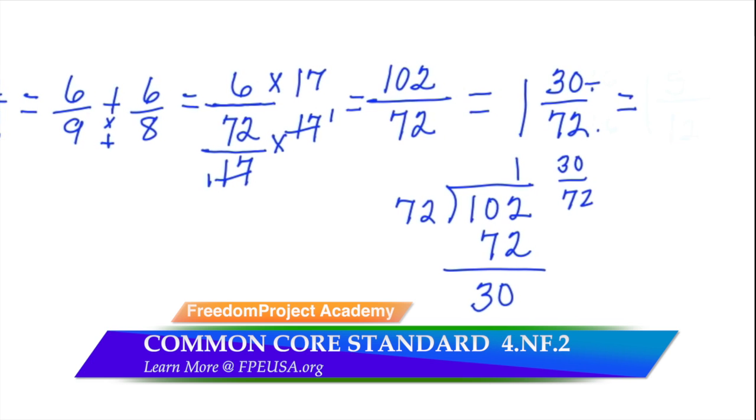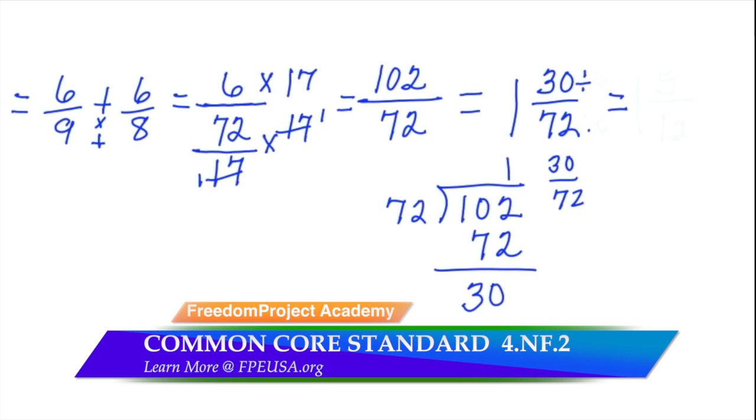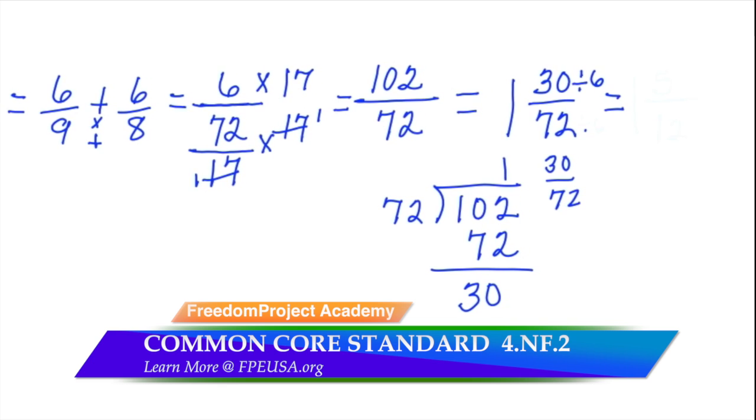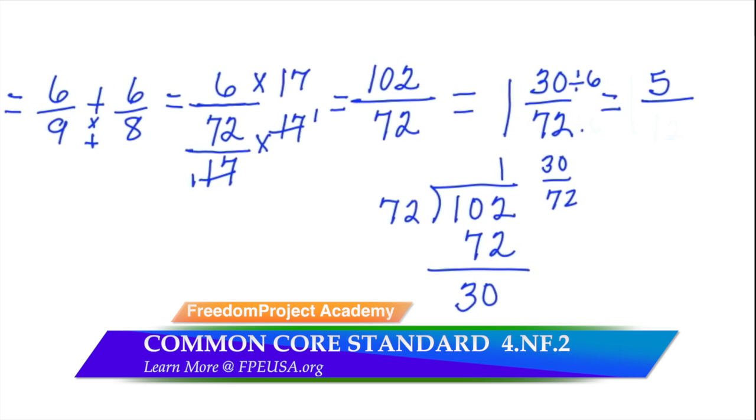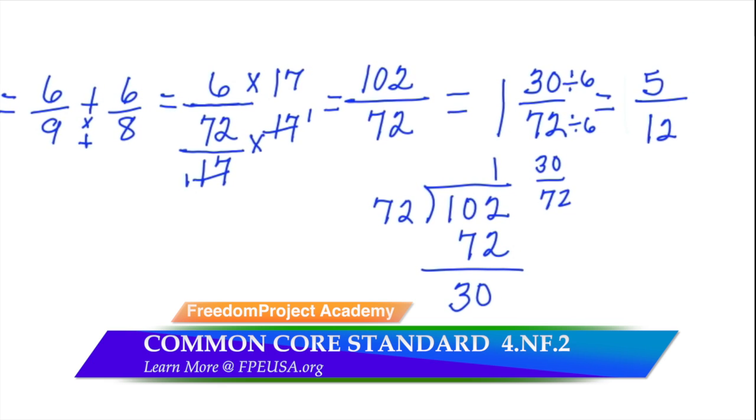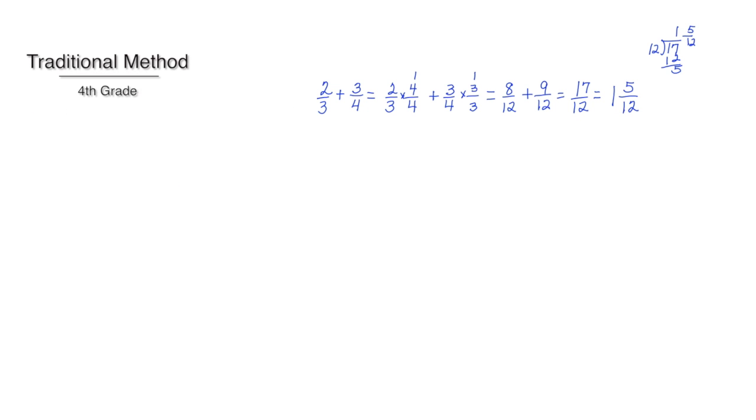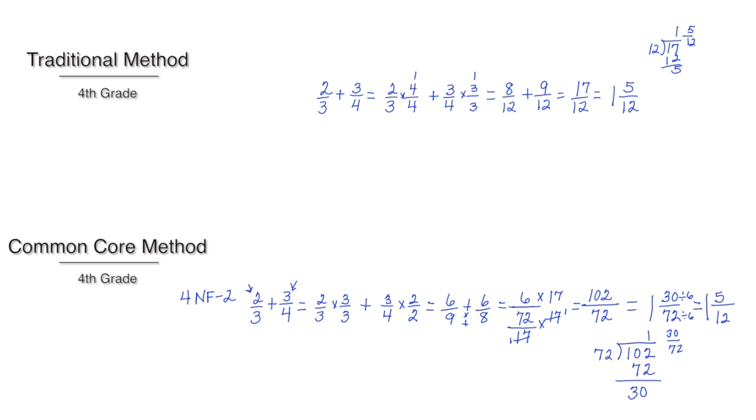So we need to find the greatest common factor, which is 6, and divide 30 by 6 to get 5, and 72 by 6 to get 12. We do end up with the same answer, 1 and 5-twelfths. But look at the complexity of adding by common numerators.